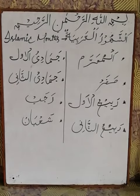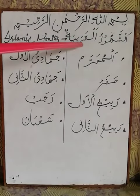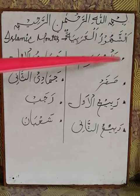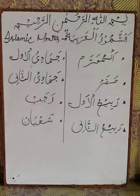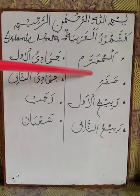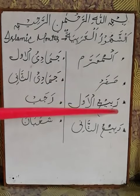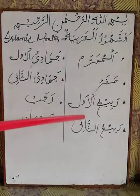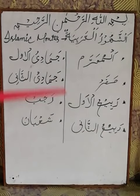So let us begin. Today's topic is Asshuhuru al-arabiyya — Asshuhuru al-arabiyya means Islamic months; jo Islamic months hote hain un ko hum Arabic mein kehte hain Asshuhuru al-arabiyya. The first one is Al-Muharam, then Safar, then Rabi ul-awwal, then Rabi ul-thani, then Jemaadi ul-awwal.